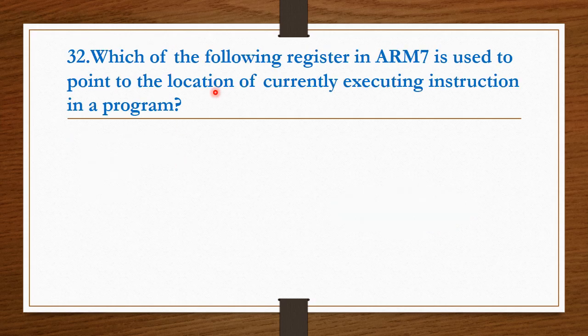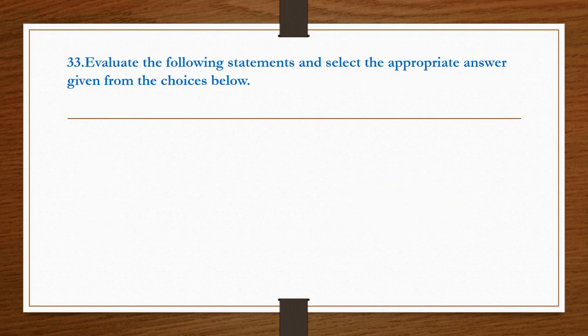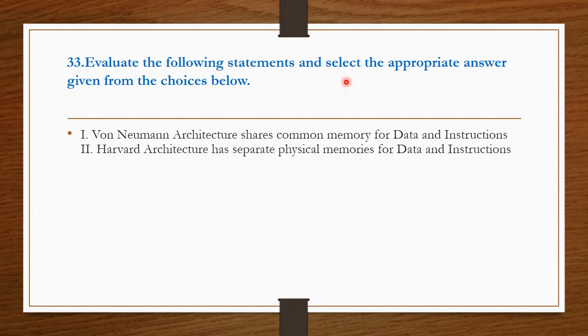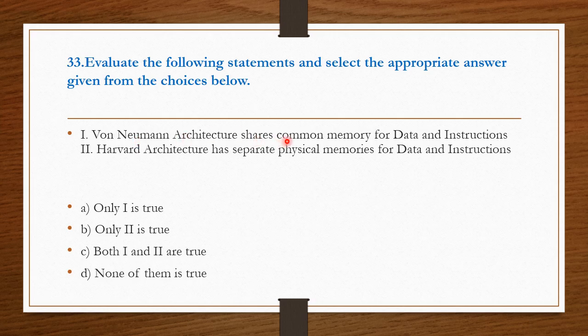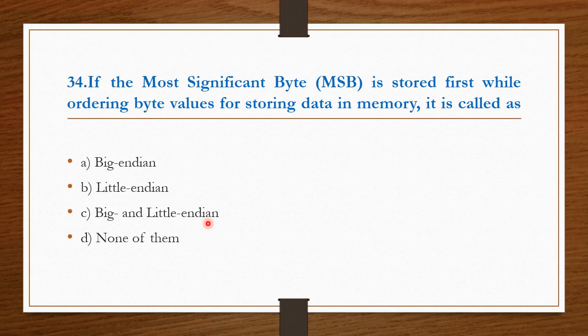Which of the following register in ARM 7 is used to point to the location of currently executing instruction in a program? R15. Option C is the right answer. Evaluate the following statements and select the appropriate answer. Von Neumann architecture shares common memory for data and instruction. Harvard architecture has separate memory for data and instruction. Both the statements are true. Therefore, option C is the right answer. If the most significant byte is stored first while ordering byte values for storing data in the memory is called Big Endian mode. Option A is the right answer.